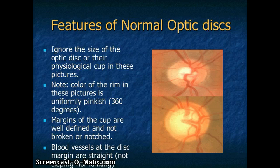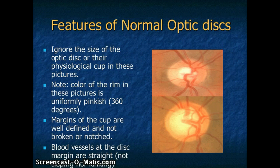Before I show you the slides of glaucomatous disc, I would like to show the features of two normal optic discs — one with a small and one with a large cup. Ignore the size of the optic disc and its cup. Note that the entire neuroretinal rim is uniformly pinkish 360 degrees in both pictures. There is no localized area of pallor. The margins of the cup are well defined and are not broken. The blood vessels crossing the disc margin are straight with no sloping at the disc margin. These two optic discs do not appear to be sinking, therefore they are normal and not glaucomatous.